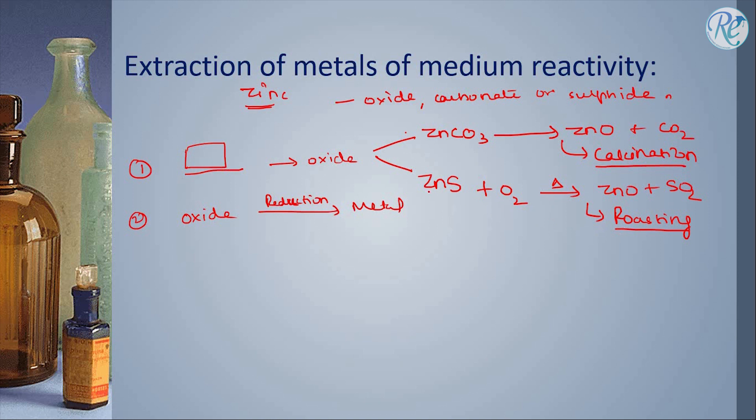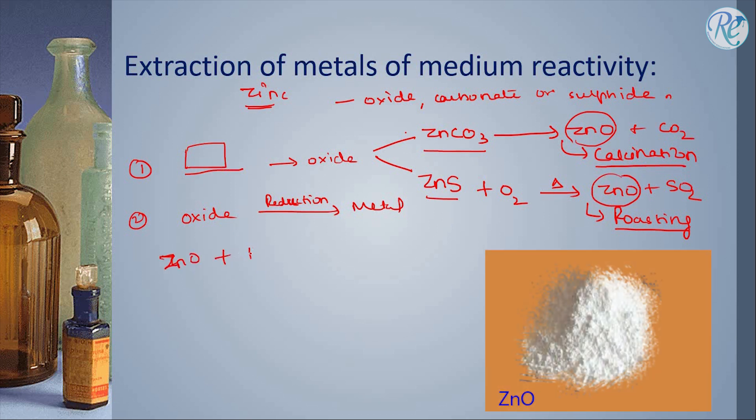Also, roasting is done for sulphide while calcination is done for carbonates. And now since we got oxide, this oxide can be again when reacted with any reducing agent will give us metal.